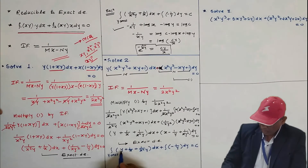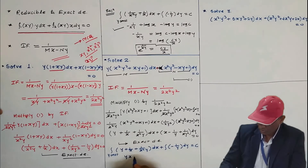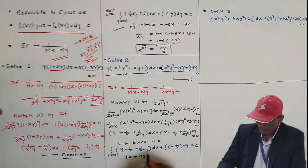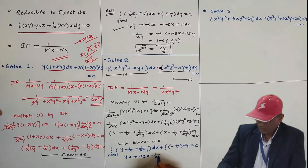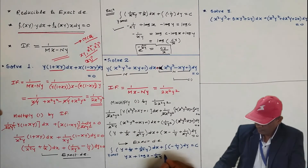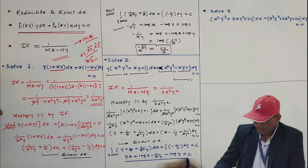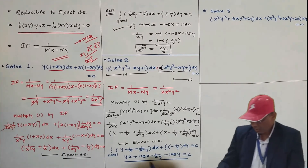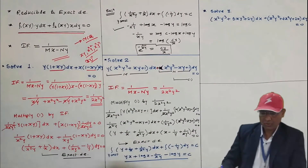The solution comes out as: −1/(xy) + log x − log y = c. You can put log c as the integration constant and collect the log terms to get a more simplified answer. In this way, the second problem is solved.